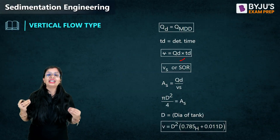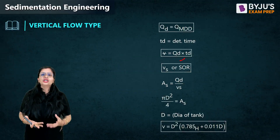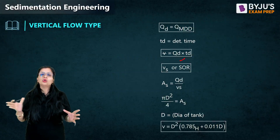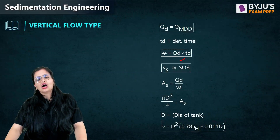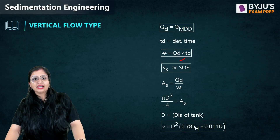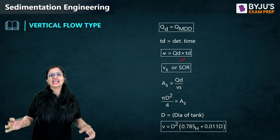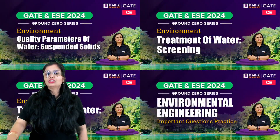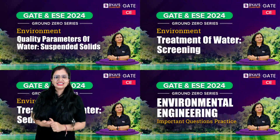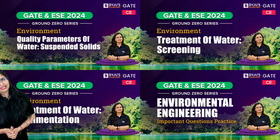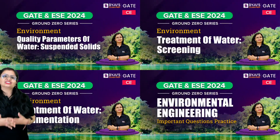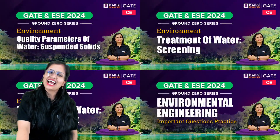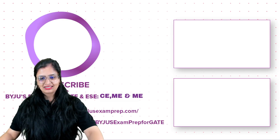In today's session, we covered what sedimentation tanks are about: fill and draw type, continuous flow type, horizontal flow type, and vertical flow type tanks — including how each one works. How to analyze or design these tanks will be covered separately. We have completed suspended solids, screening, and sedimentation. The next session will be questions practice, scheduled for Saturday at 8 PM. Stay tuned, take care, bye-bye and study high!